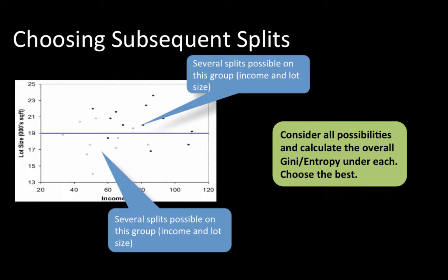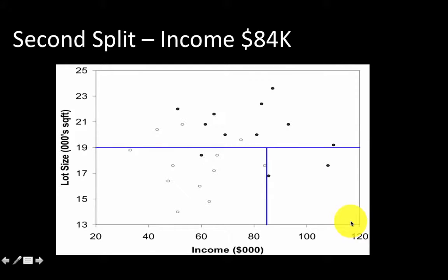Going by that procedure, it turns out that the system finds that the second split is best at an income of about 85. So all the cases greater than or equal to 85 are on this particular node, and all the cases less than 85 are here.